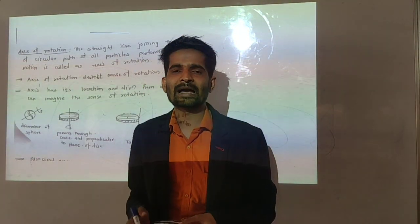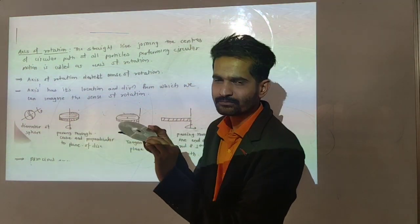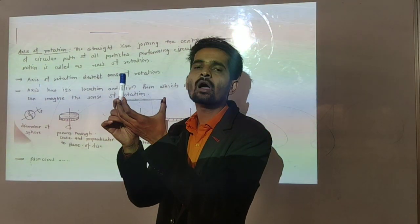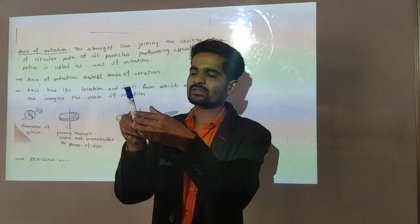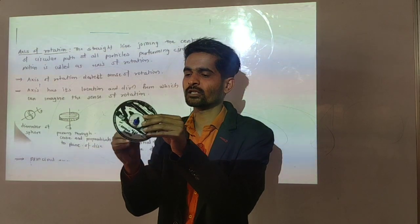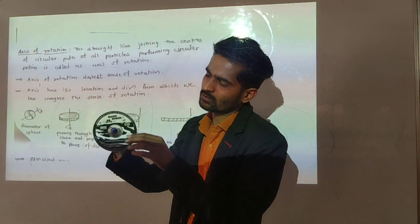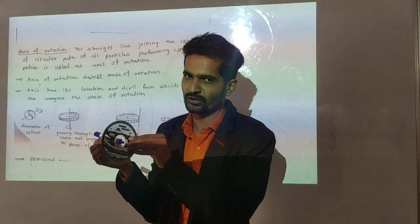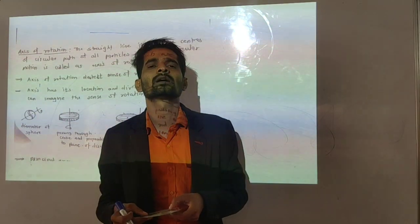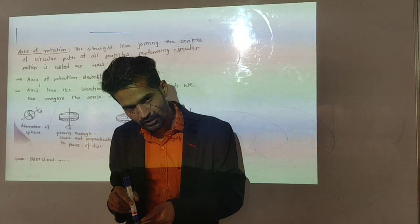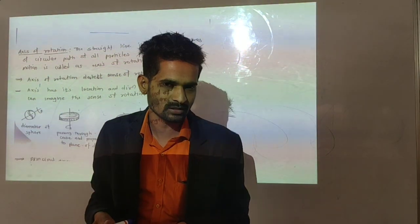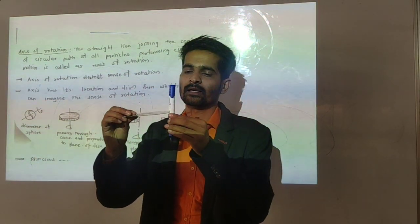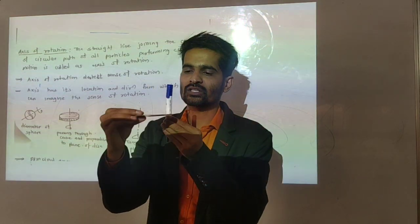When I say the disc is rotating about an axis which is tangential and perpendicular to the plane — this is the plane of the disk, and this is the perpendicular plane. If we consider the tangential axis, the disc rotates in a certain way. Another case: axis passing through center and perpendicular to the plane — when the axis passes through center and is perpendicular to the plane, you should know how the object rotates. Tangential and perpendicular to plane gives a different rotation.